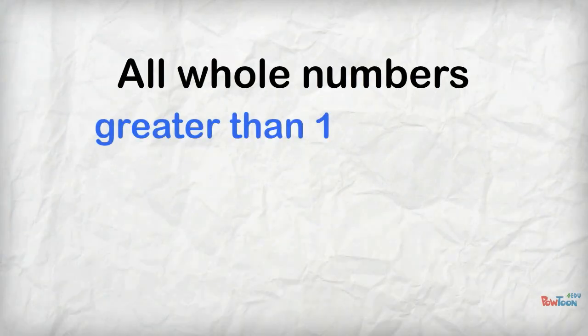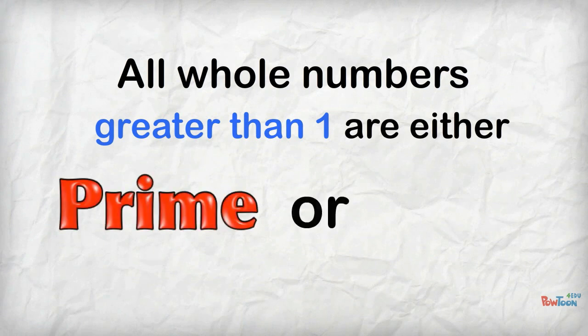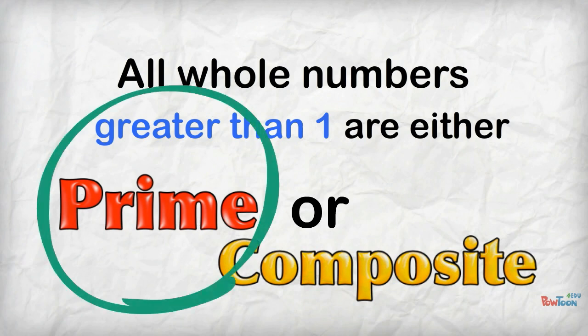All whole numbers greater than 1 can be classified as either prime numbers or composite numbers. Let's start by finding out what a prime number is.